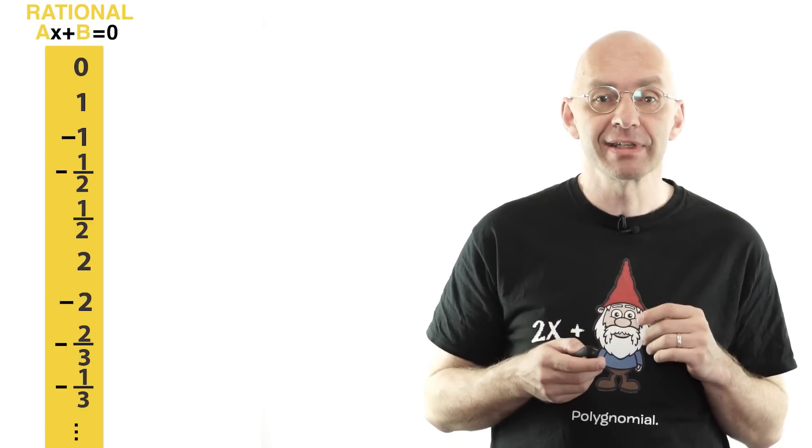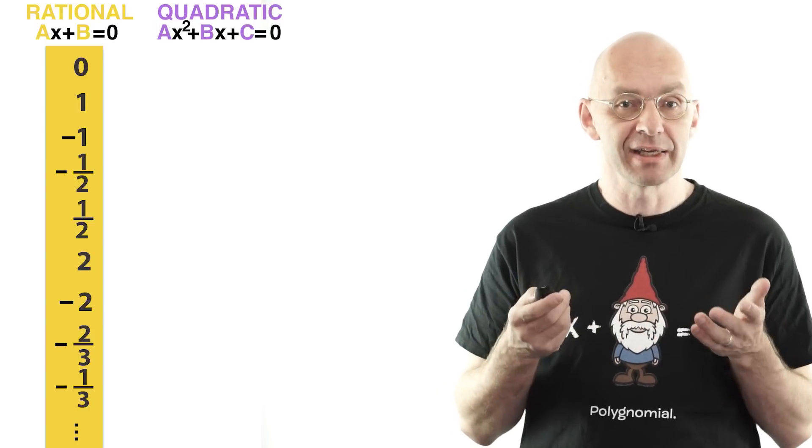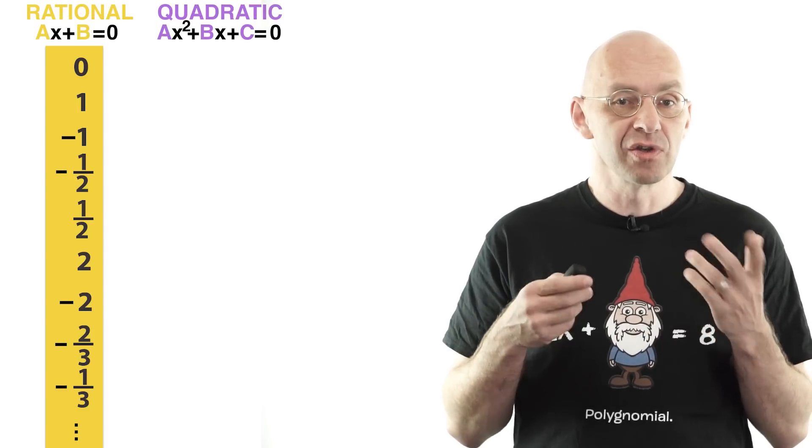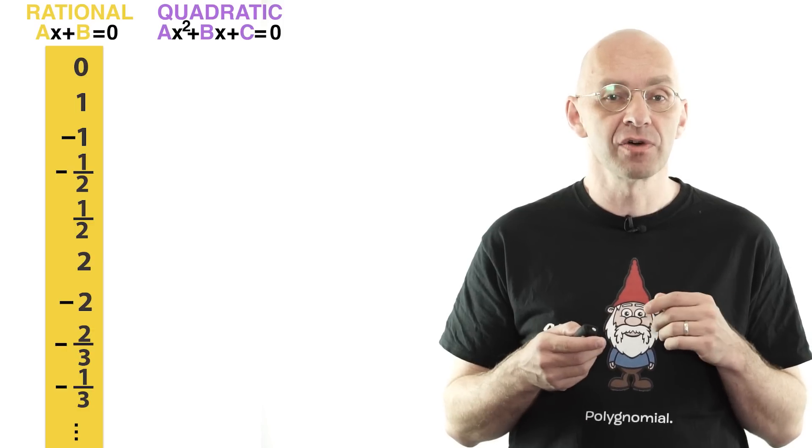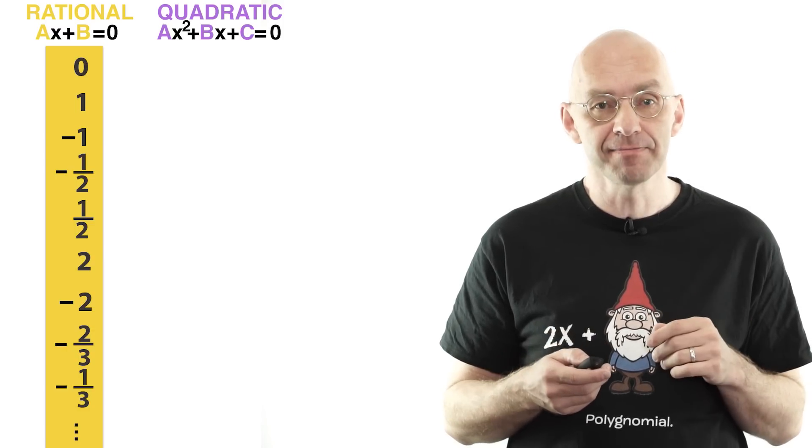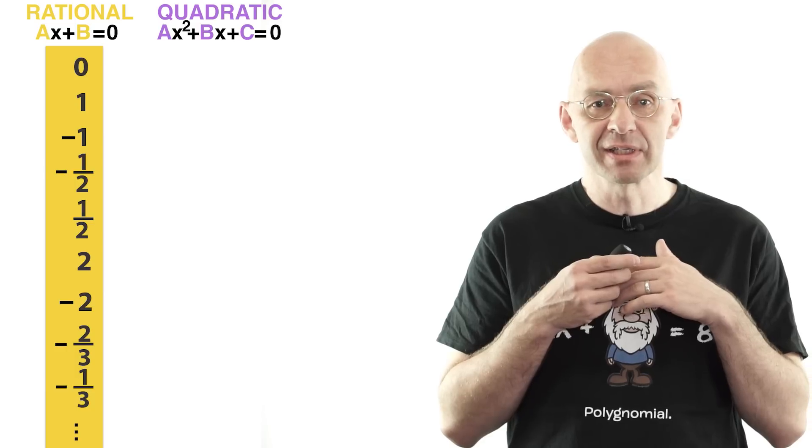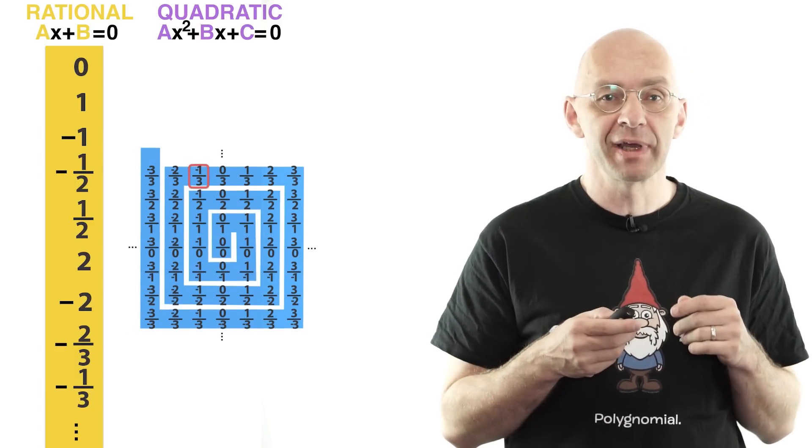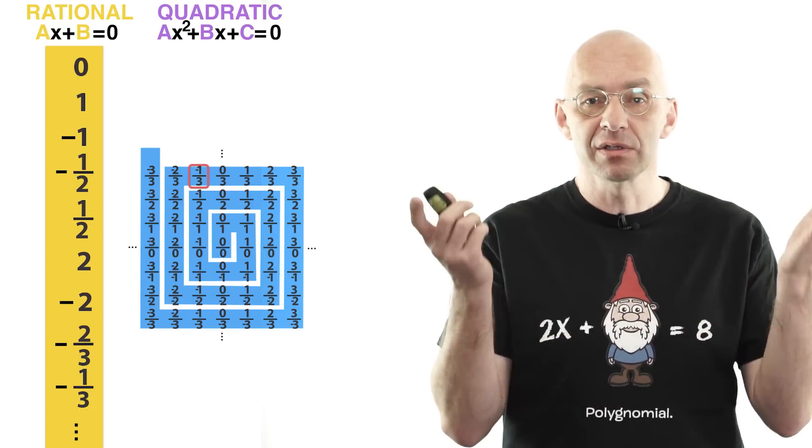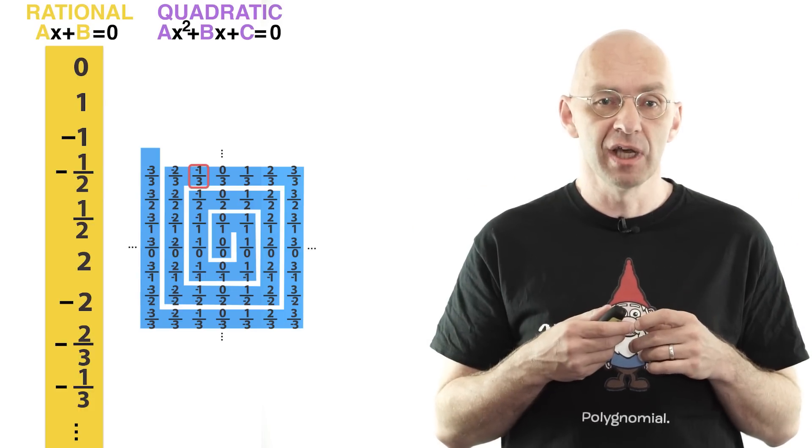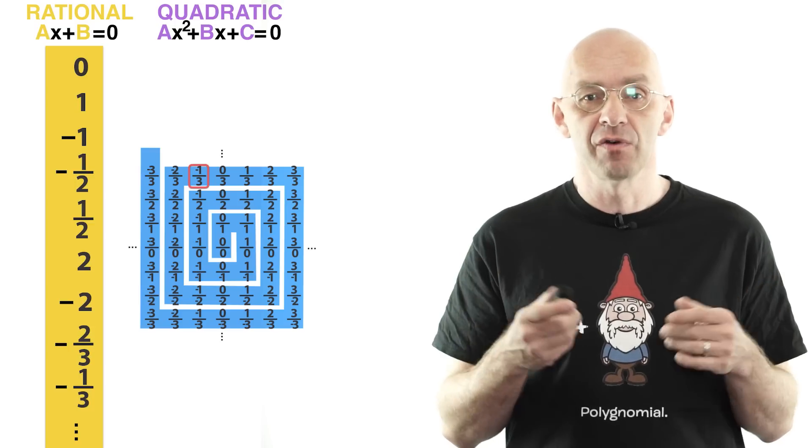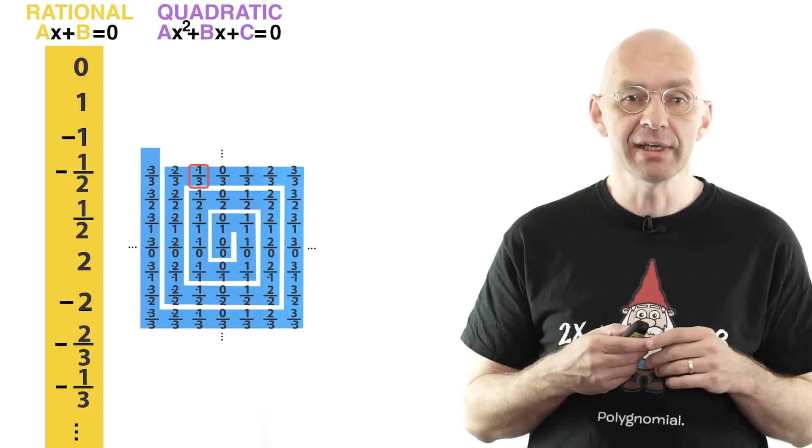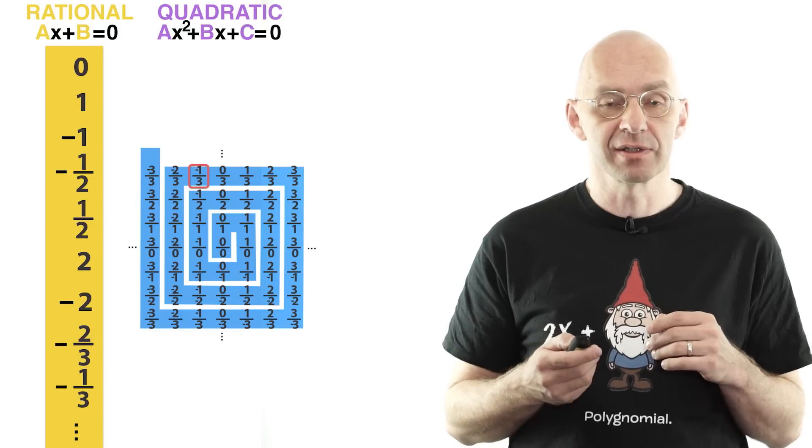Okay, after we've listed the rational numbers, we list the quadratic irrationals, and these are the solutions of quadratic equations with three integer coefficients a, b, and c. Now just like we systematically inspected a 2D grid here of all integer pairs from the inside out to cycle through all fractions, we can use a 3D grid of all integer triples a, b, c to cycle through all possible quadratic equations.